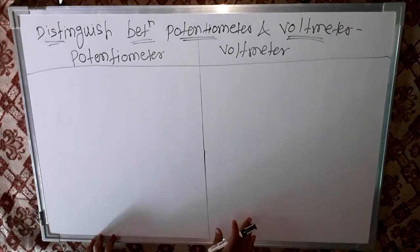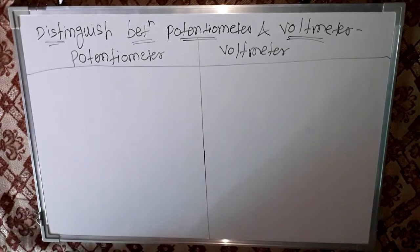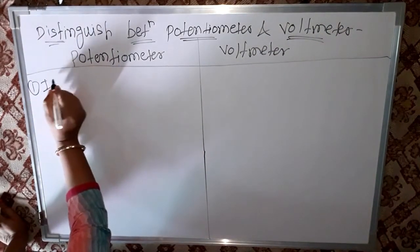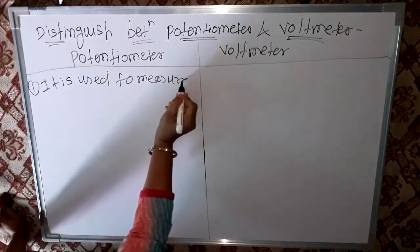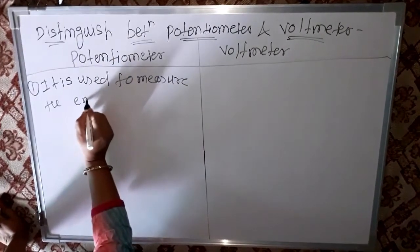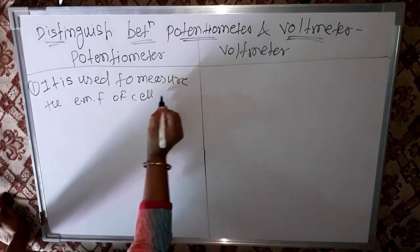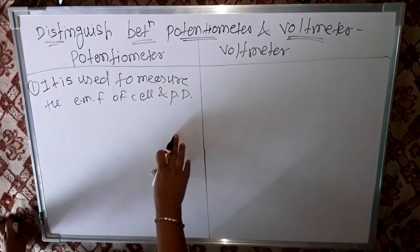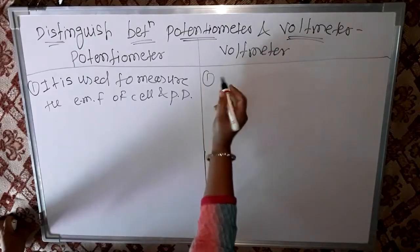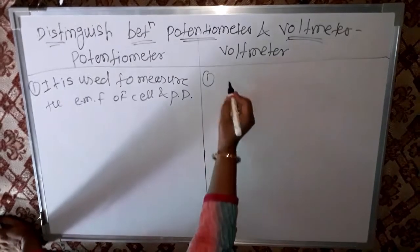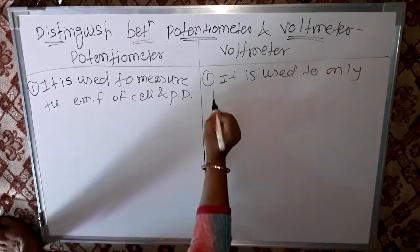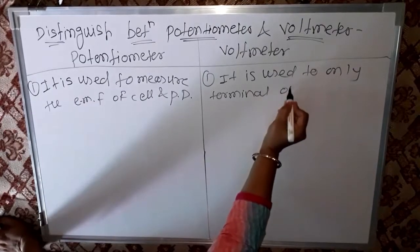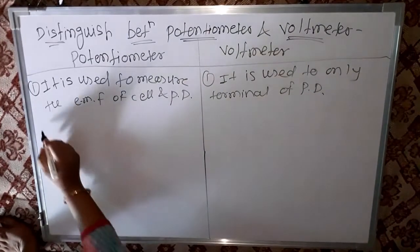Distinguish between potentiometer and voltmeter. This question is completely four marks. First point: in a potentiometer, it is used to measure the EMF of a cell and the potential difference (PD). In contrast, the voltmeter is used to measure only the terminal PD.